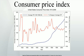Although some of the sampling of items for price collection is done using probabilistic sampling methods, many items and outlets are chosen in a common sense way that does not permit estimation of confidence intervals. Therefore, the sampling variance cannot be calculated. The index is usually computed monthly, or quarterly in some countries, as a weighted average of sub-indices for different components of consumer expenditure, such as food, housing, clothing, each of which is in turn a weighted average of sub-sub-indices.